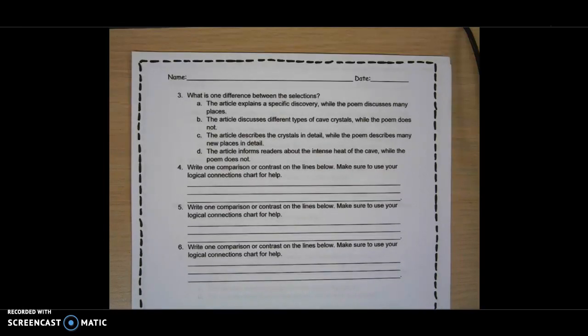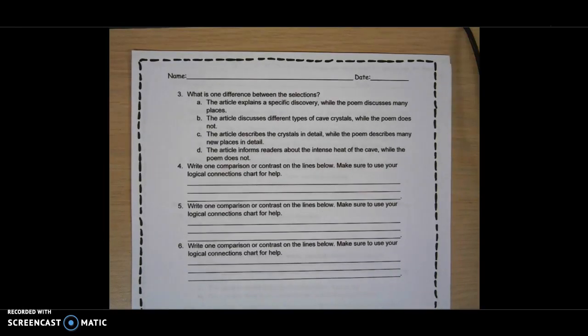Now, 4, 5, and 6. I will read them all together because they are all exactly the same. Write one comparison or contrast on the lines below and make sure to use your Logical Connections Chart for help. You also need to make sure that you are using your Sentence Stems. Each of these will count off if you do not use your Sentence Stems or you do not use your Logical Connections Chart for help.